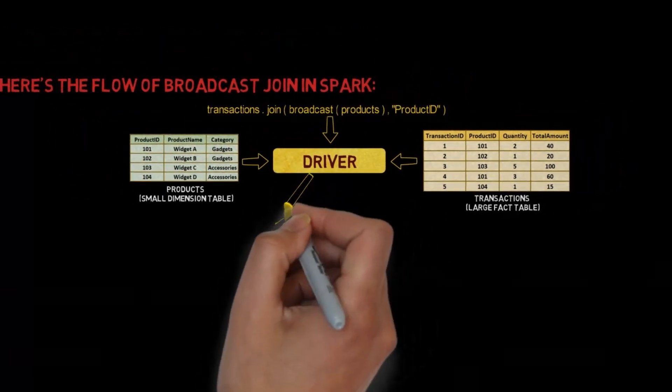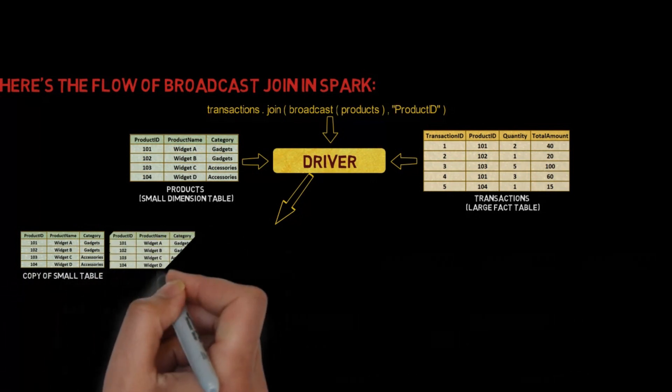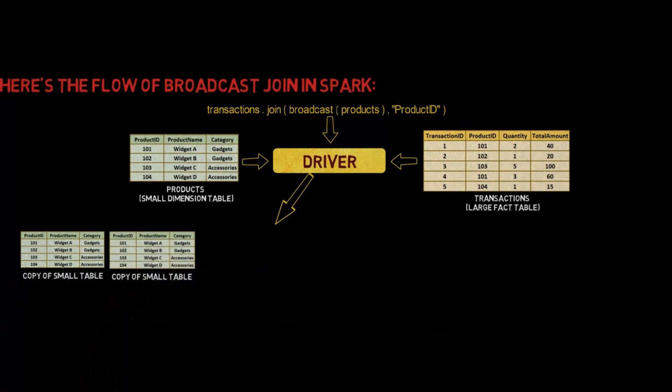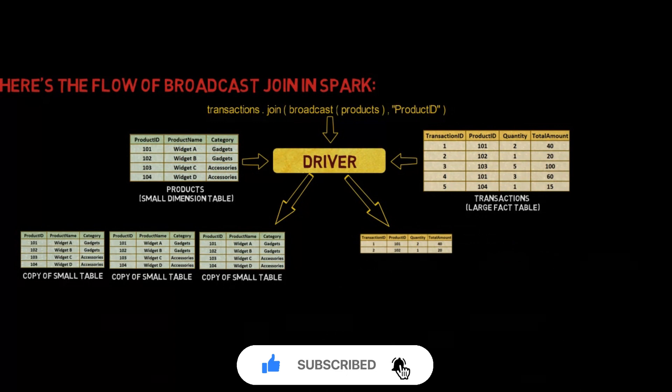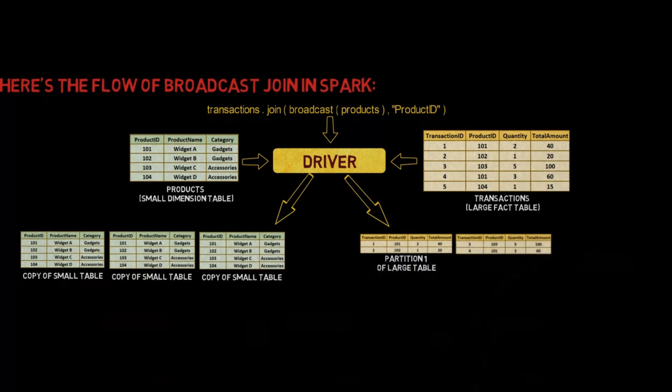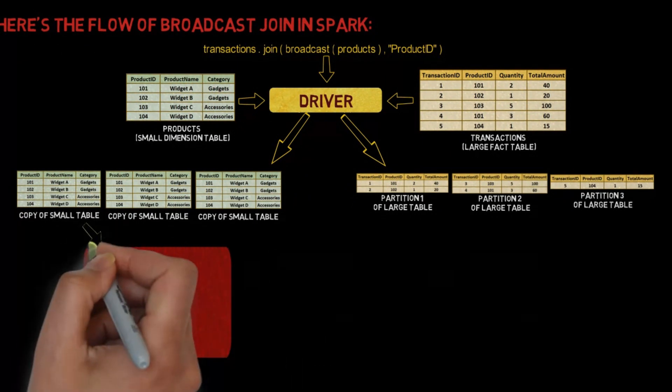If the small dataset is within the broadcast size limit, Spark broadcasts the small dataset to all nodes in the cluster. It sends a copy of the small table to all the worker nodes. The large dataset is distributed across the cluster nodes. It partitions the large table and distributes the partitions to all the worker nodes.